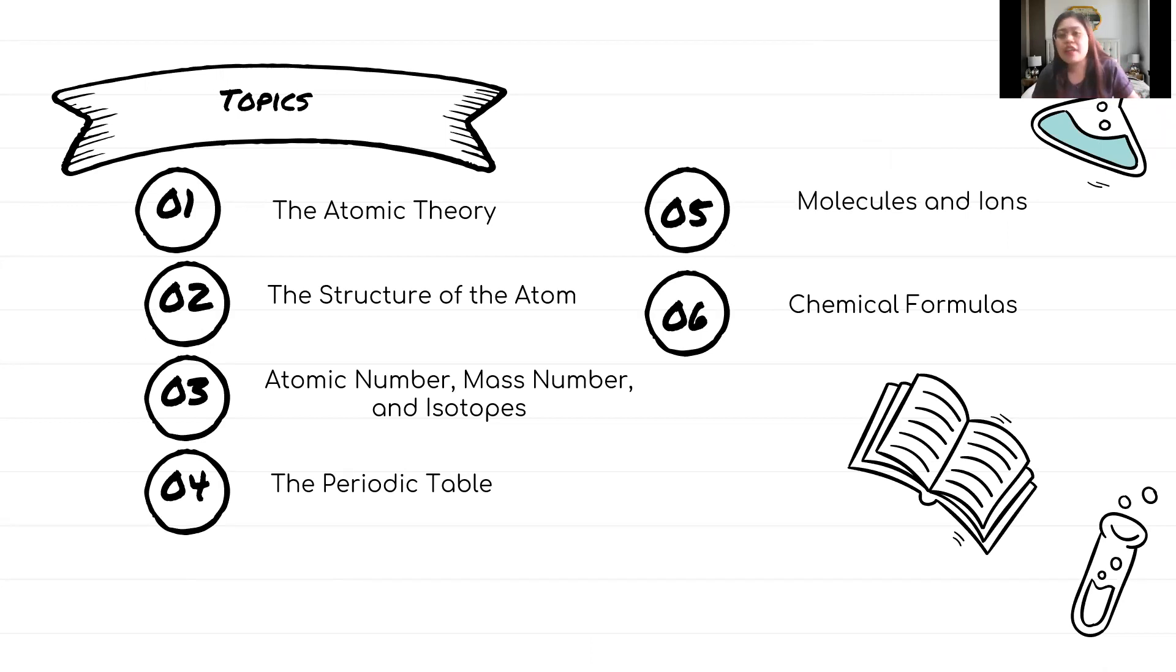Number four, we have the periodic table. Number five, molecules and ions. And lastly, we will have the chemical formula.